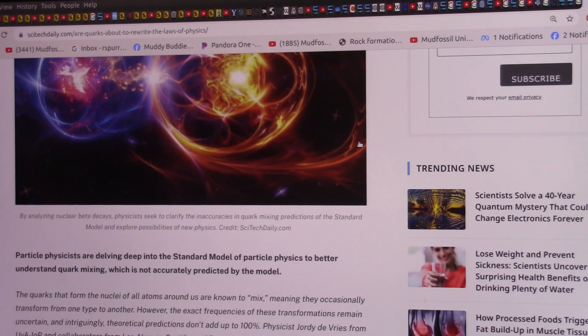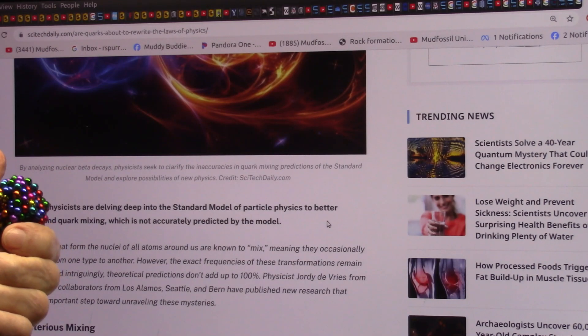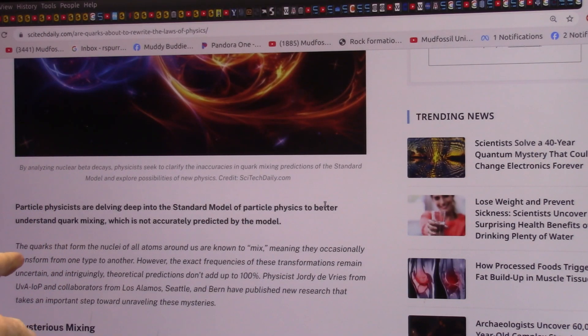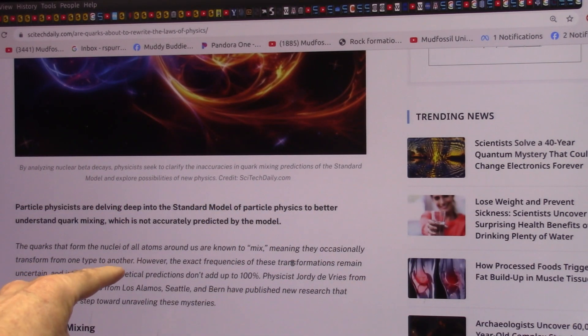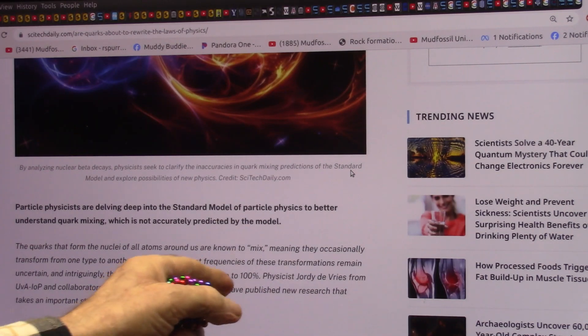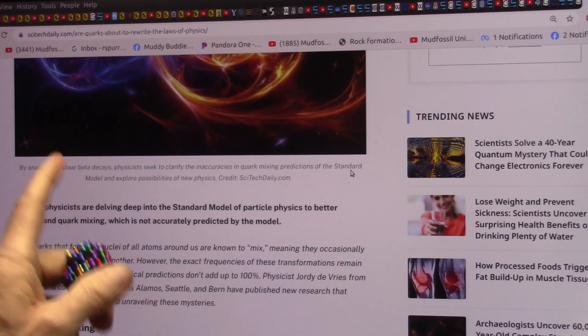Particle physicists are delving deep into the standard model of particle physics to better understand quark mixing, which is not accurately predicted. It just doesn't work. Neither does gravity. Neither does the speed of light. Neither does anything. It's just totally wrong, all of it. Because they don't understand everything is made of dipoles. And it's the only two particles that exist. Now, I say the quarks that form the nuclei of all atoms around us are known to mix, meaning they occasionally transform from one type to another. However, the exact frequencies of these transformations remains uncertain and intriguingly theoretical predictions don't add up to 100%. No, not by any means. Physicists from Los Alamos, Seattle, and Bern have published new research that takes an important step toward unraveling these mysteries. Well, they should talk to me.